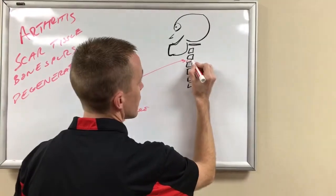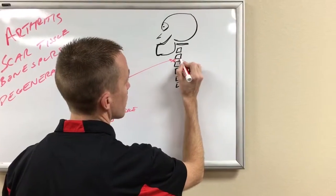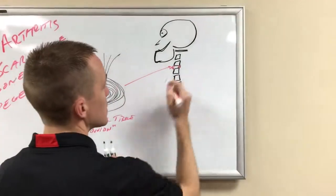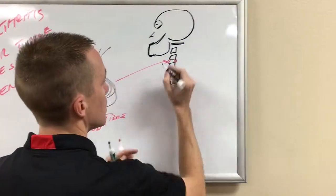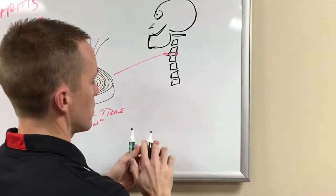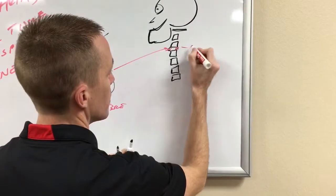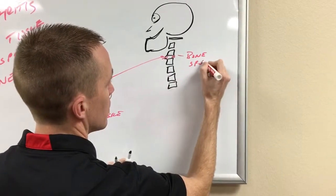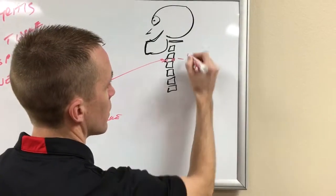Eventually we start to see things like spurs forming. We've heard of those, bone spurs or arthritis.